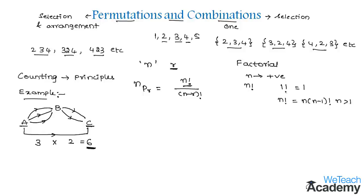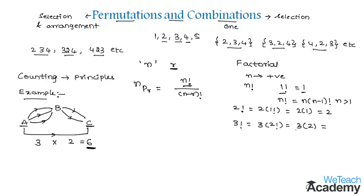To find 2 factorial, we multiply 2 with 1 factorial. Since 1 factorial equals 1, we get 2 into 1, so 2 factorial equals 2. Similarly, 3 factorial is found by multiplying 3 with 2 factorial — replacing 2 factorial gives us 3 into 2, which equals 6. By following the same procedure we can find other factorials. Always remember that 0 factorial equals 1.